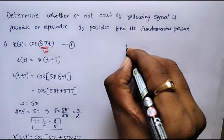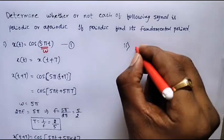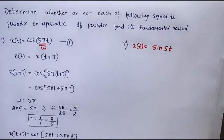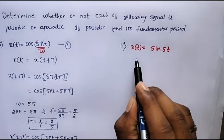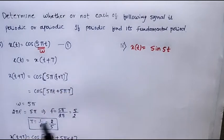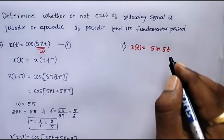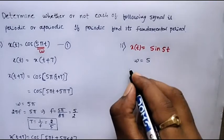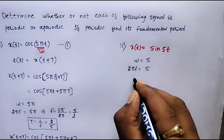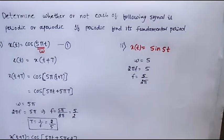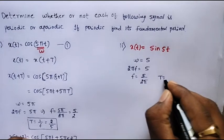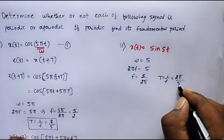Let us consider another example. The given signal is x(t) = sin(πt). We know that for periodicity x(t) = x(t + T). Here the signal is of the form sin(ωt), so ω = π. Therefore ω = 2πf = π, which gives f = π/(2π) = 1/2, and therefore T = 1/f = 2π/π = 2 seconds.